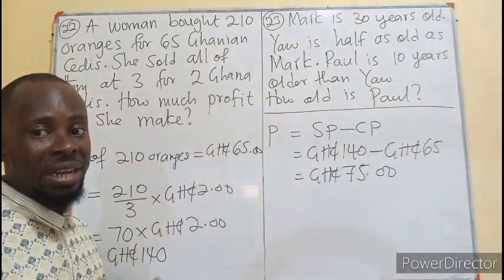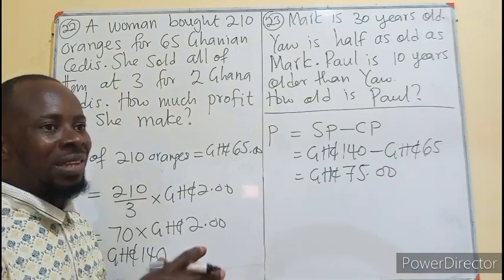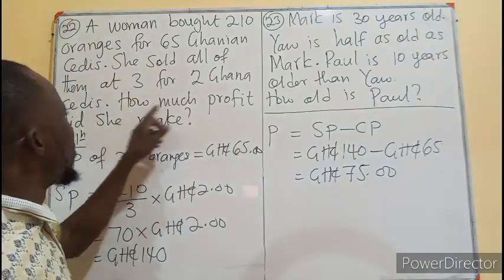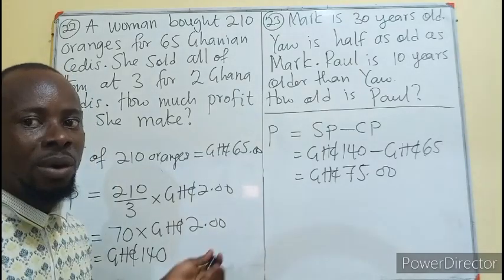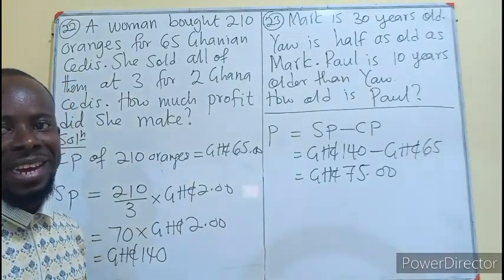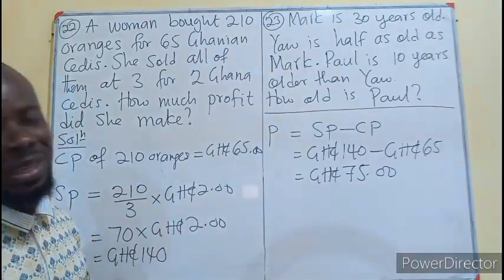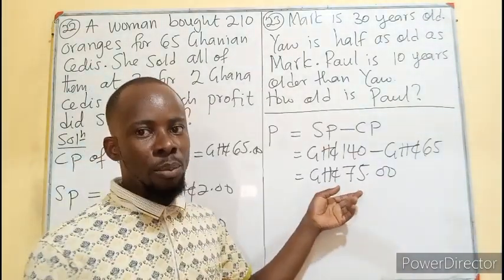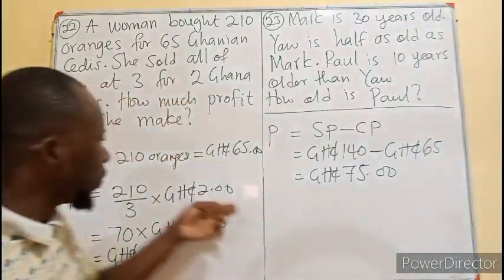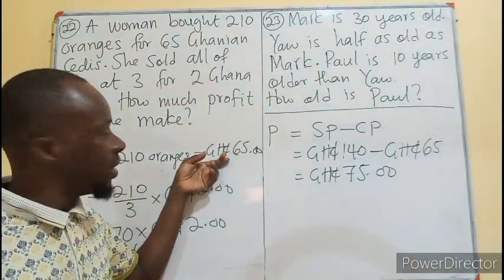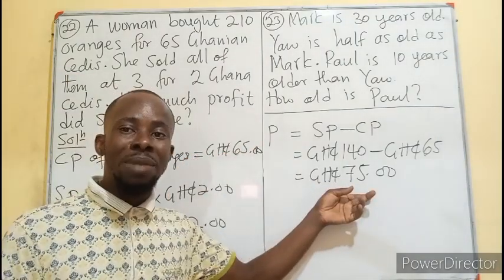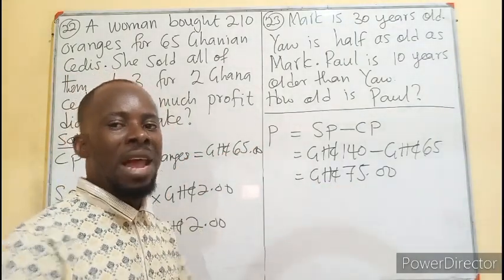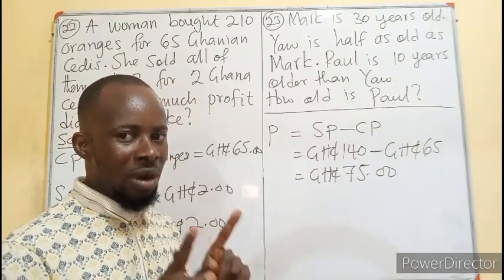We are only looking for the profit, not the percentage. But note this is more than 100% profit because the cost price was 65 Ghana cedis and she made an extra 65 plus 10 cedis — so more than 100% profit.